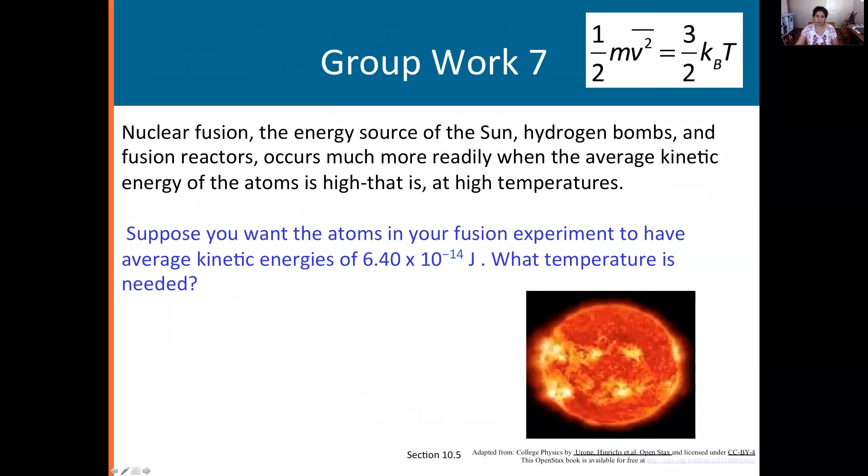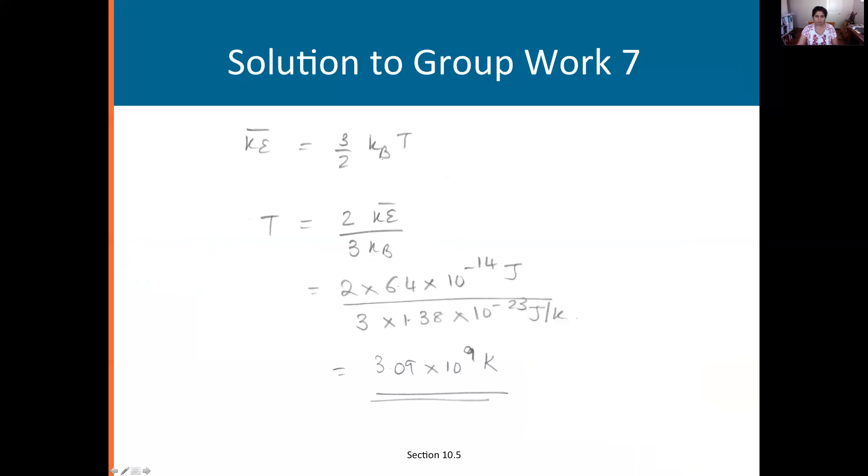I'm going to take average kinetic energy equals 3 over 2 kBT. You know this value here. It's what's given to you. 6.4 times 10 to the minus 14 equals 3 over 2. Look up KB and solve for T. T will be in Kelvin. That's all you need to do and it's done for you over here.